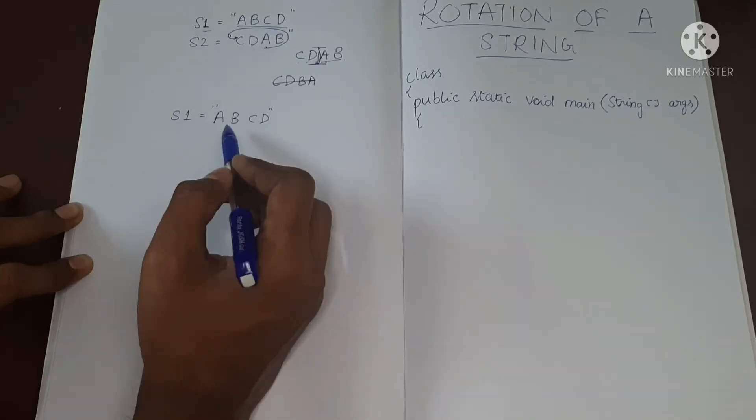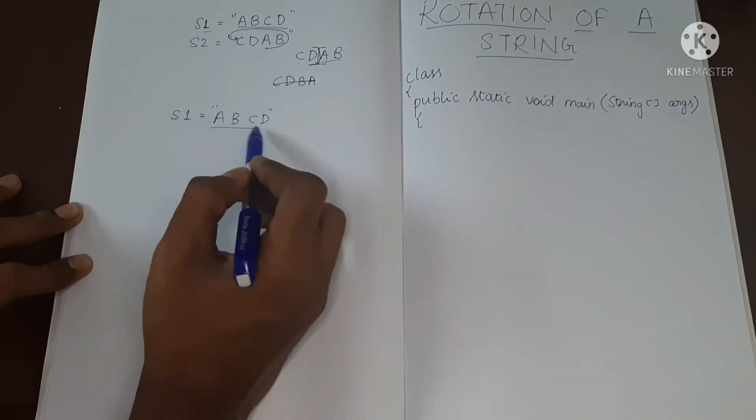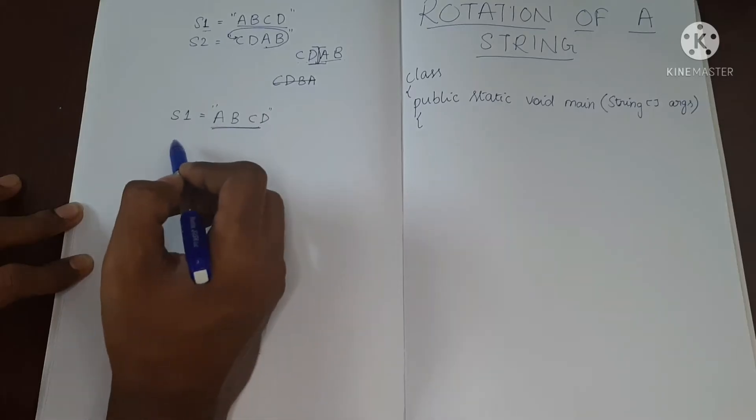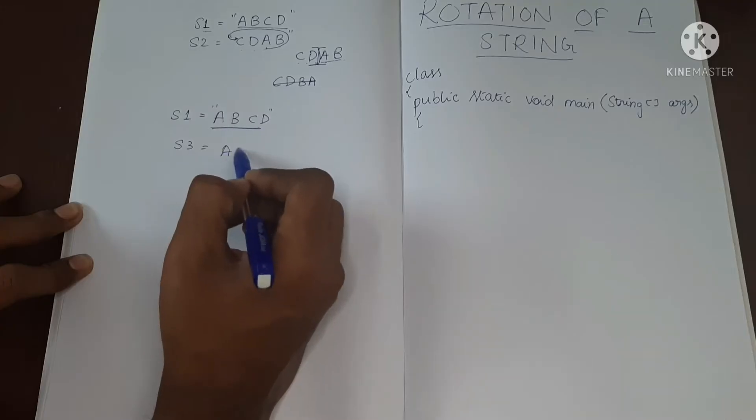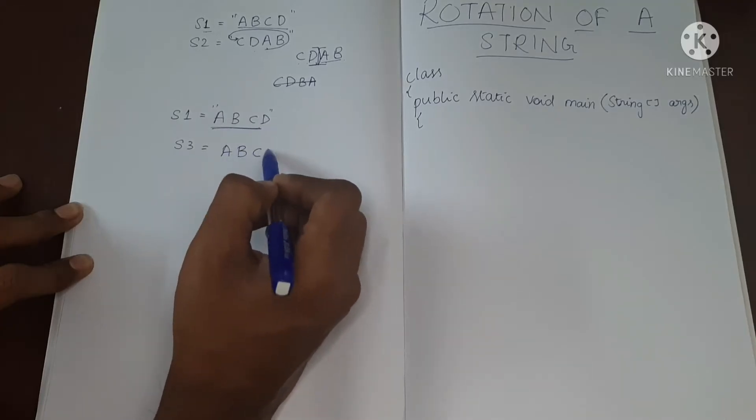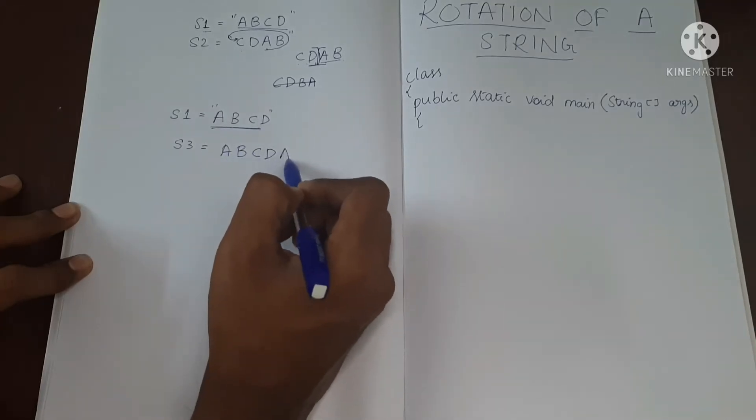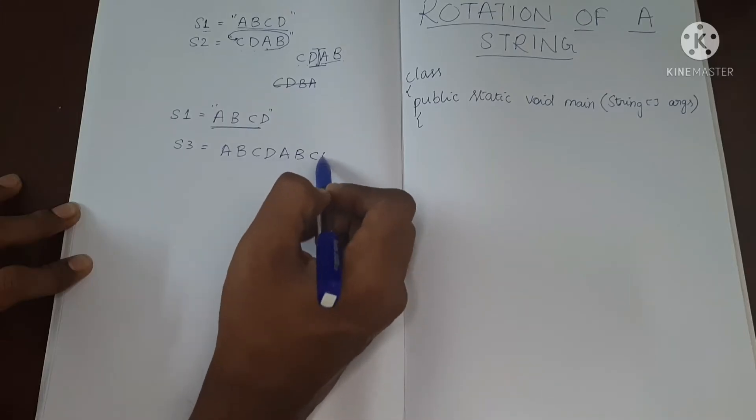What we are going to do is, let's just make this twice. So let's say S3 is twice of this, that is A, B, C, D, and then A, B, C, D.